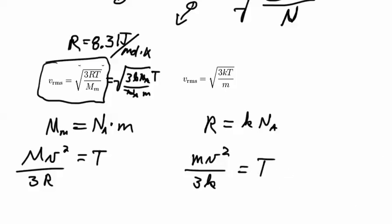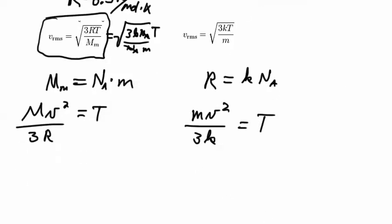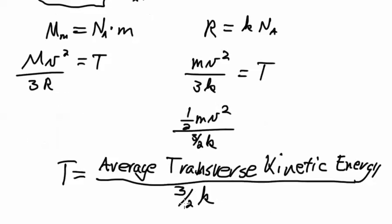Now this is one half m v squared divided by 3 halves k. So the temperature is equal to the average transverse kinetic energy in the gas divided by 3 halves k.